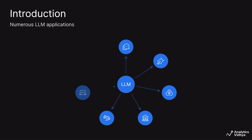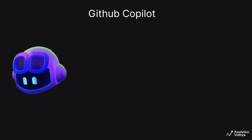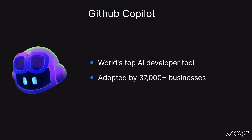There are over hundreds of applications driven by LLMs already in the market and in use. Some of the popular examples being GitHub Copilot — it's the world's most widely adopted AI tool for developers. It can write the code for us on the fly. Today, more than 37,000 plus businesses and one in every three Fortune 500 companies have already adopted GitHub Copilot.